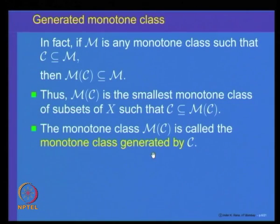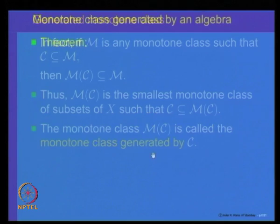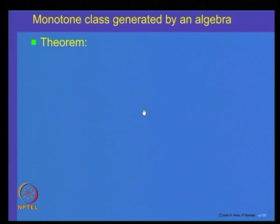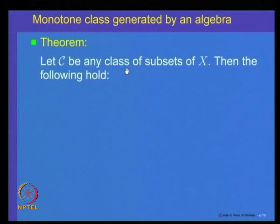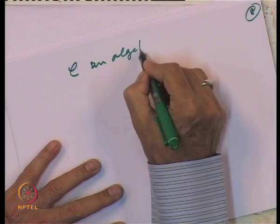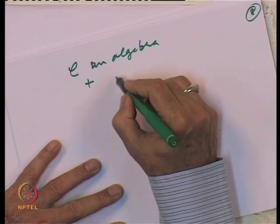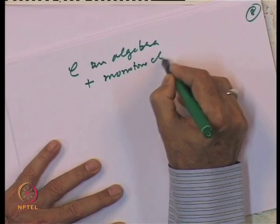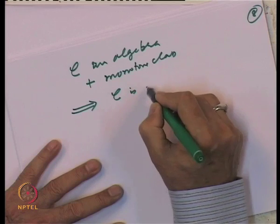We want to prove a theorem relating these concepts. The first observation: if C is both an algebra and a monotone class, then C is a sigma algebra. Let us prove that algebra plus monotone class implies sigma algebra. To prove C is a sigma algebra, we need: the empty set and whole space belong to C (true, C is an algebra); C is closed under complements (true, C is an algebra); and C is closed under countable unions.